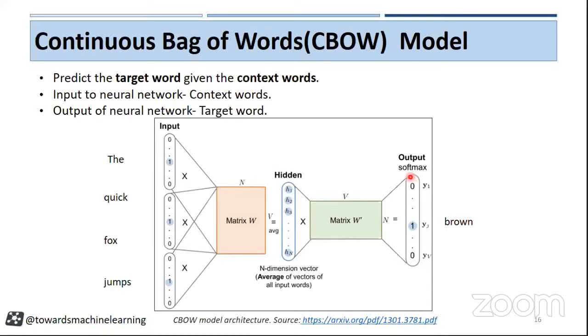So basically here again, we are using the softmax function here, activation function here, and we will do the backpropagation to update the parameters of W and W dash.